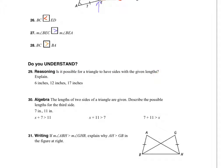Question 29 asks whether a triangle can have sides of the given lengths. I check all three triangle inequalities: 6 + 12 > 17 — true; 6 + 17 > 12 — true; 12 + 17 > 6 — true. All three inequalities hold, so yes, this is a valid triangle.